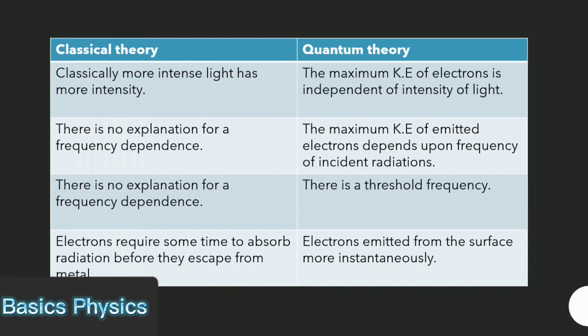Quantum theory: The maximum kinetic energy of electrons is independent of intensity of light. The maximum kinetic energy of emitted electrons depends upon frequency of incident radiations. There is a threshold frequency. Electrons are emitted from the surface more instantaneously.